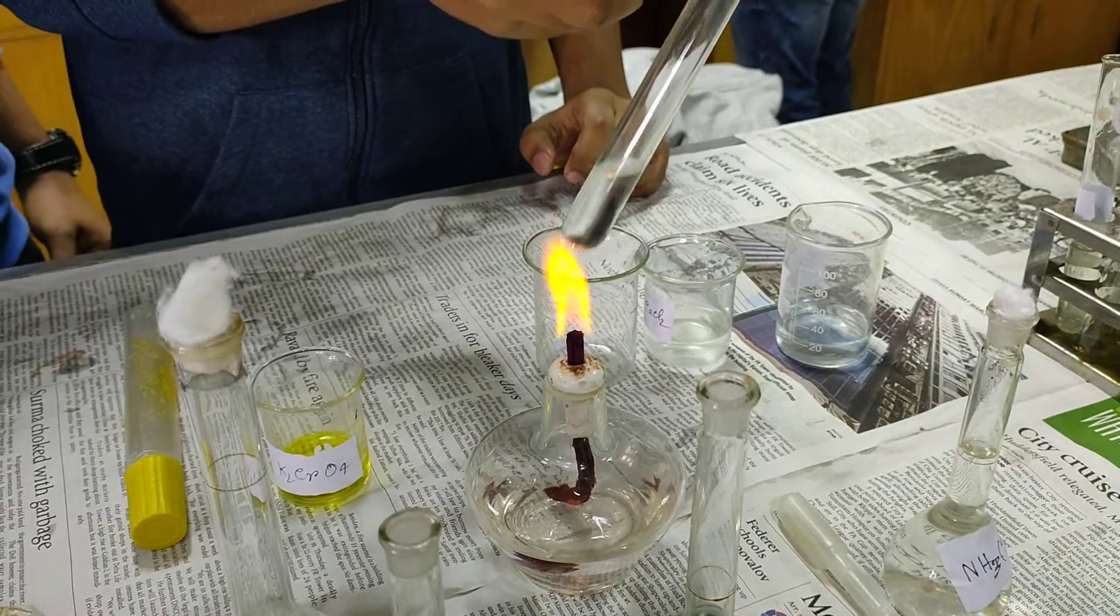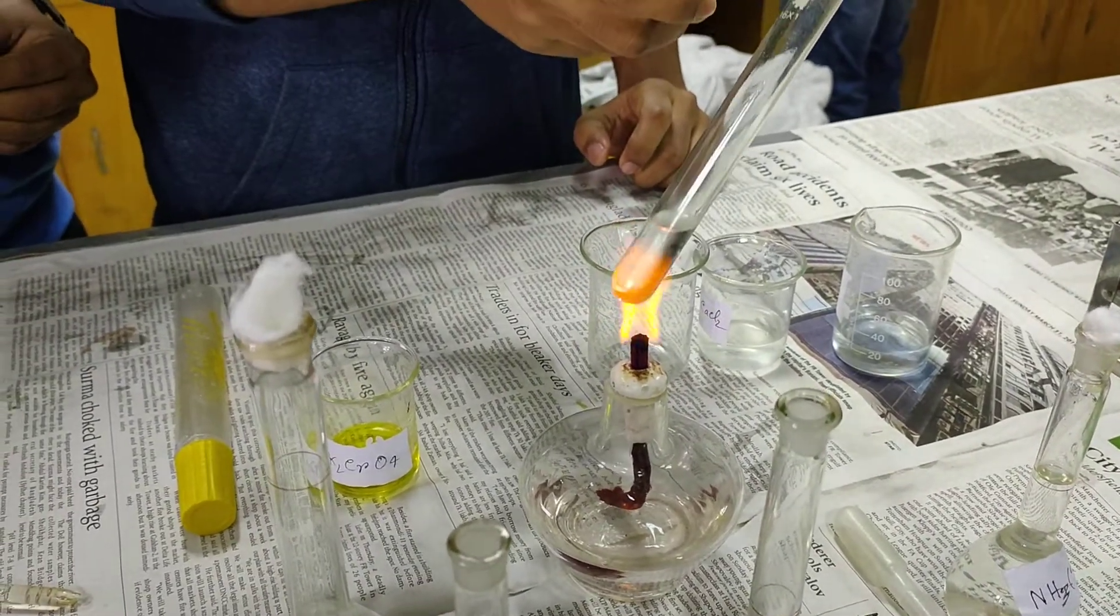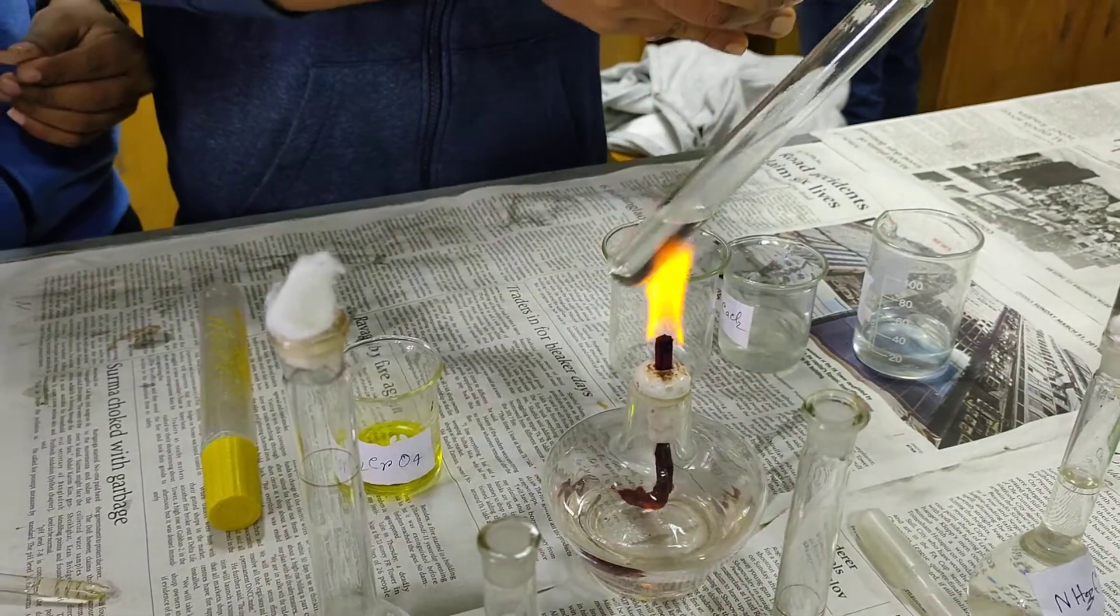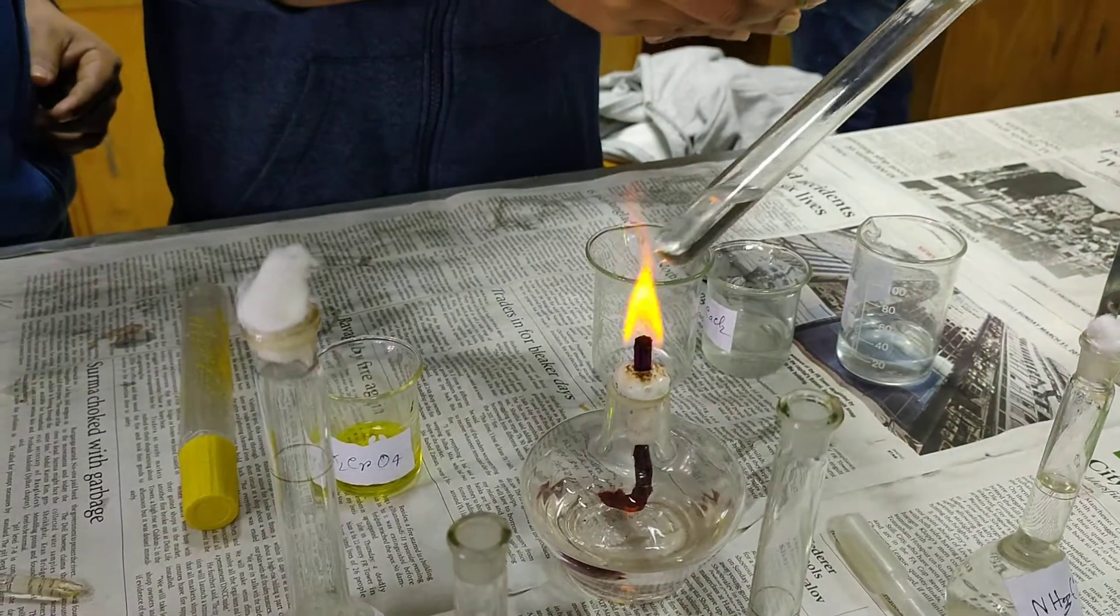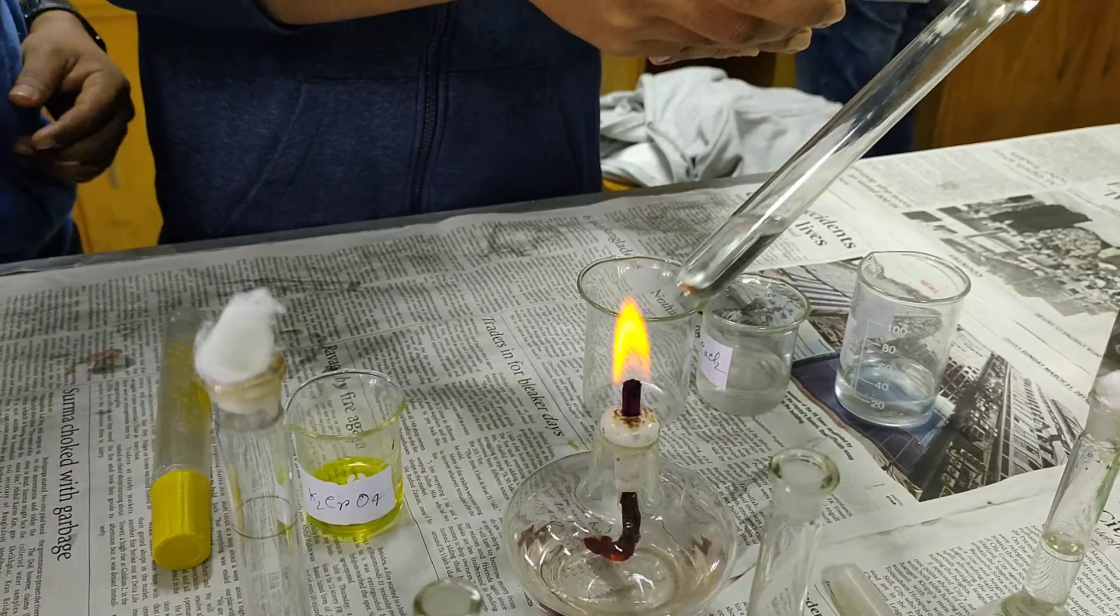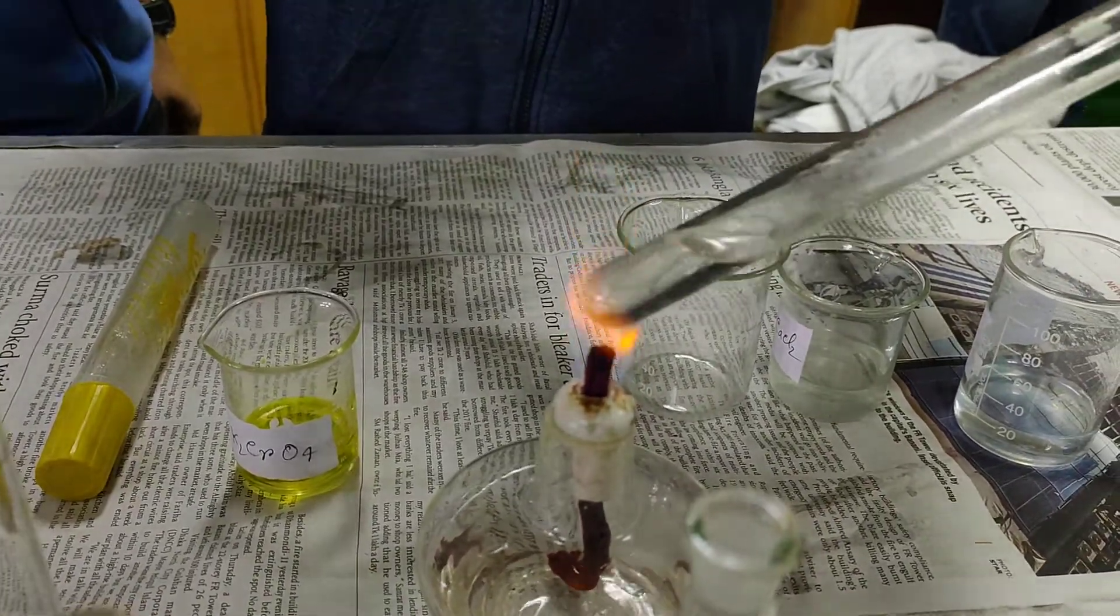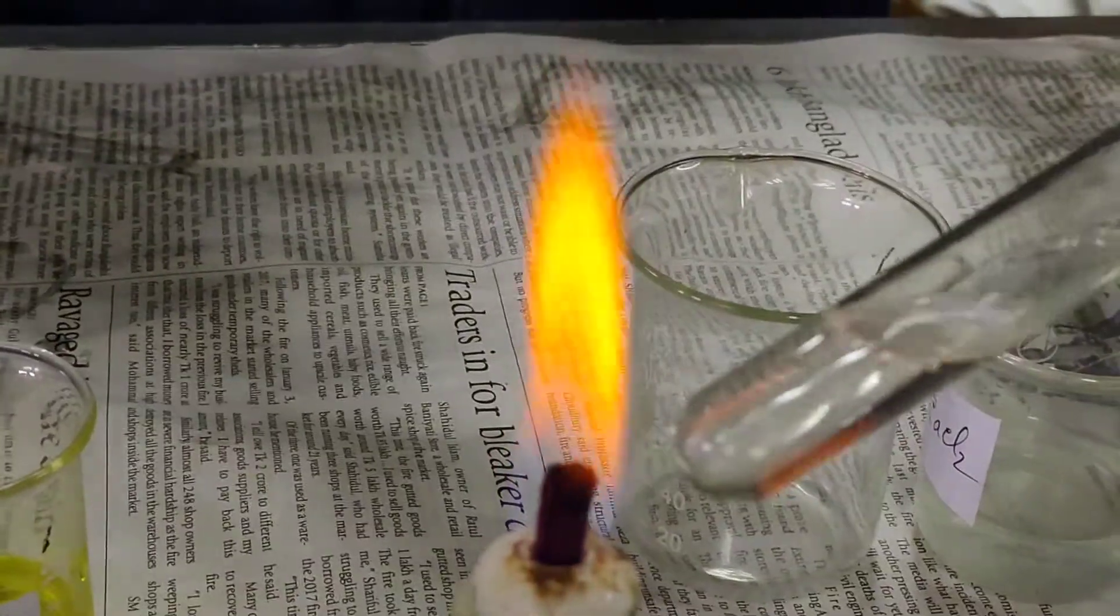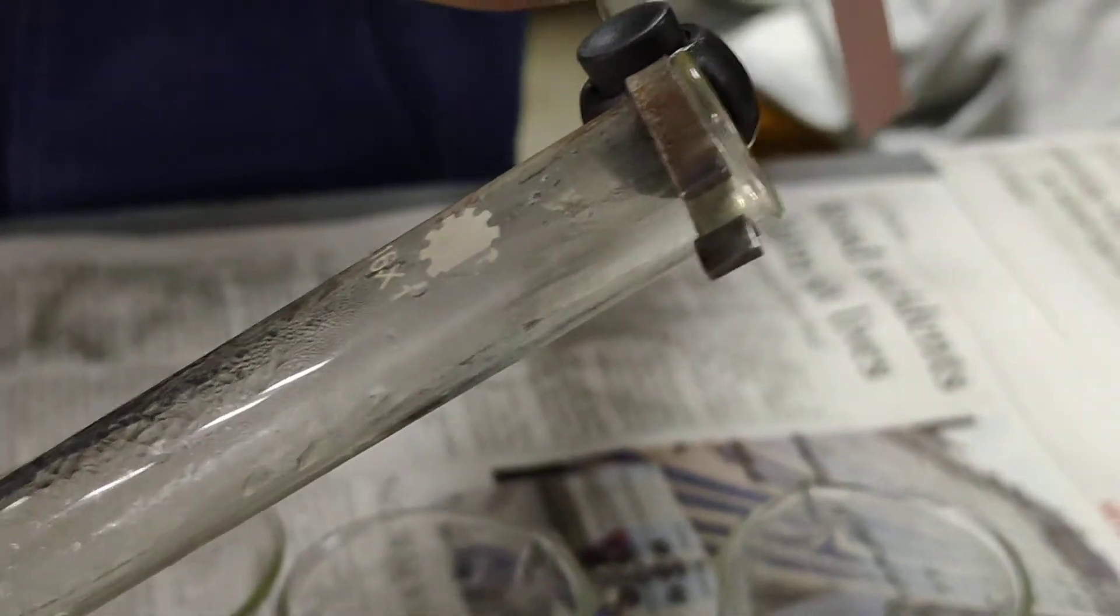We are heating the test tube. When the gas evolves, this gas will turn red litmus paper into blue. After heating, when the gas evolves, it has an ammoniacal smell and it will turn red litmus paper into blue.